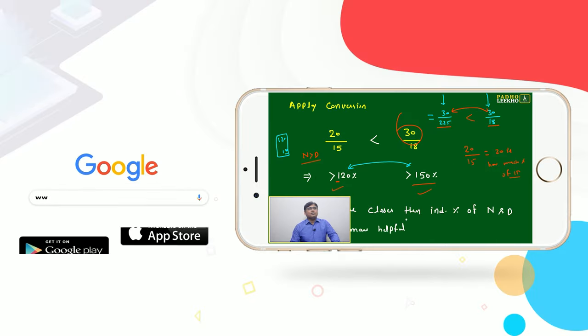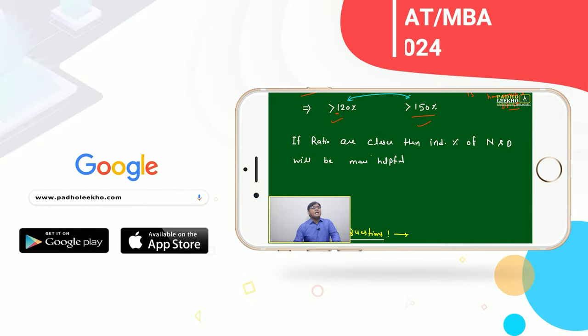If ratios are closer, we can say if it is closer, then individual percentage of numerator and denominator will be more helpful.